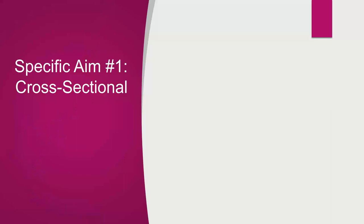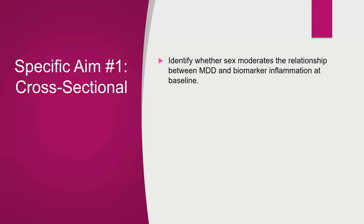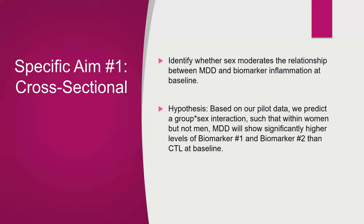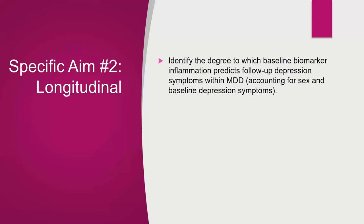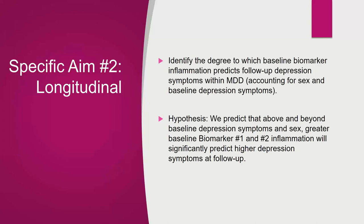For example: Specific Aim 1 is cross-sectional — to identify whether sex moderates the relationship between MDD and biomarker inflammation at baseline. The hypothesis, based on pilot data, predicts a group-by-sex interaction such that within women but not men, MDD will show significantly higher levels of biomarker one and biomarker two than controls at baseline. Specific Aim 2 is longitudinal — identifying the degree to which baseline biomarker inflammation predicts follow-up depression symptoms within MDD, accounting for sex and baseline depression symptoms. The hypothesis predicts that above and beyond baseline depression symptoms and sex, greater baseline biomarker one and two inflammation will significantly predict higher depression symptoms at follow-up.